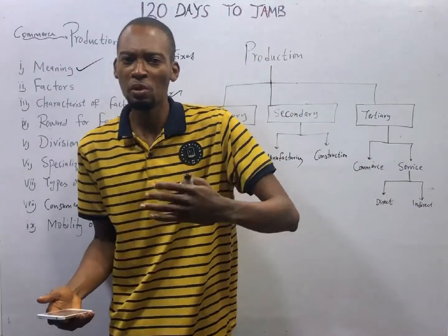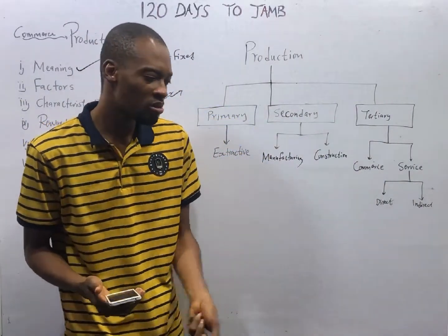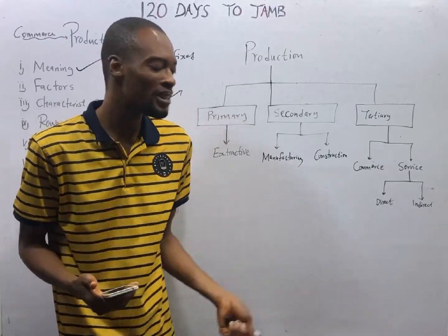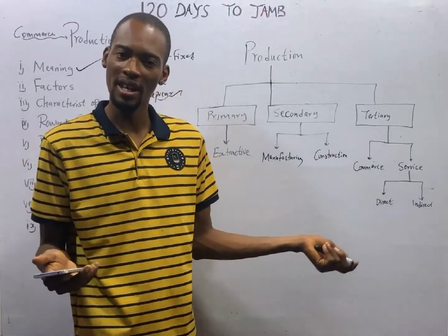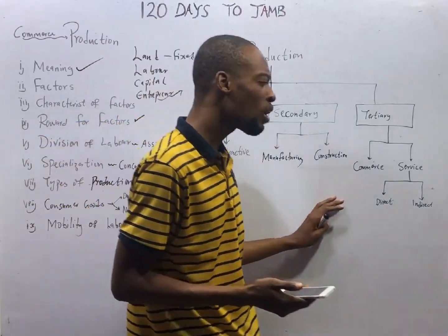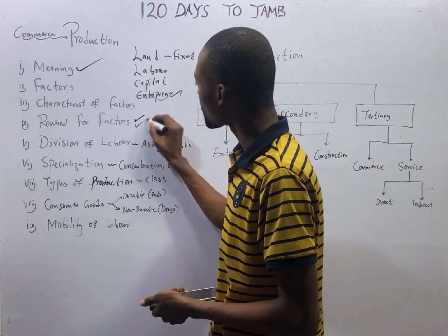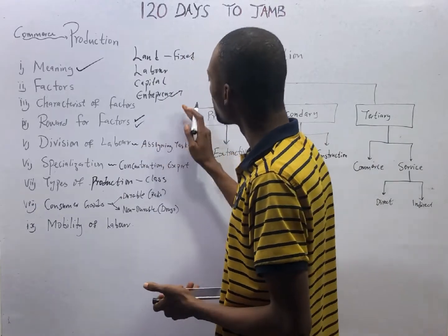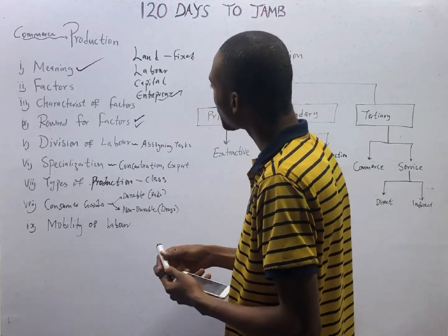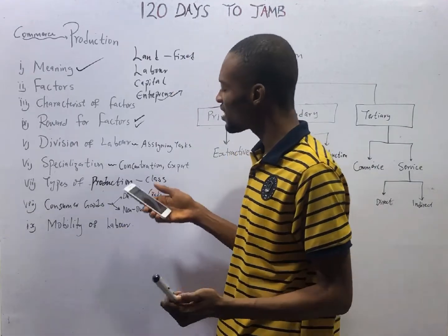Labor can be motivated through remuneration — you pay workers and they will be motivated to work. The reward for labor is wages and salary. For land, the reward is rent.